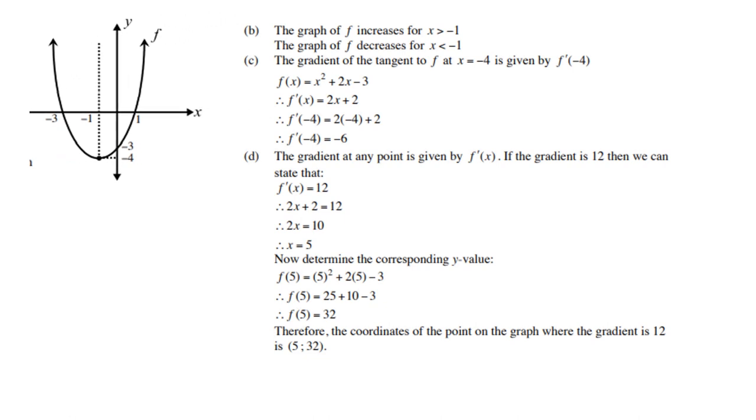Looking at the graph, f increases when x > -1. The gradient of the tangent to f at x = -4 is given by f'(x). First differentiate, replace x with -4, and you get -6.